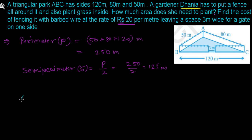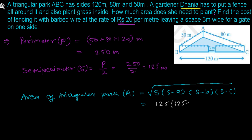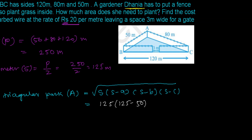Now let's find the area of the triangular park. From Heron's Formula, area = √(s × (s−a) × (s−b) × (s−c)). The semi-perimeter s is 125. So we have √(125 × (125−50) × (125−80) × (125−120)), where 50, 80, and 120 are the three sides a, b, and c respectively.